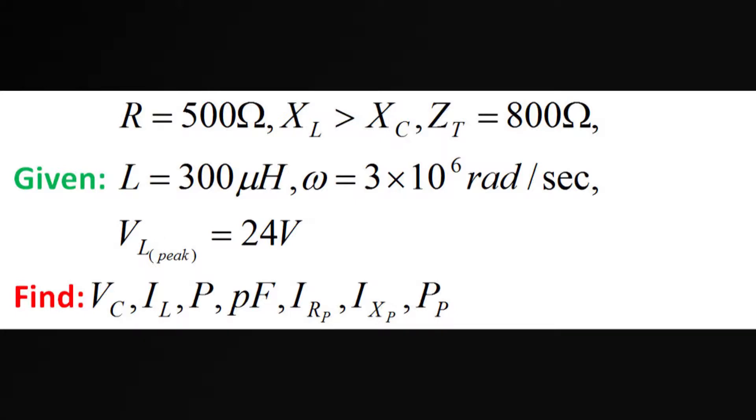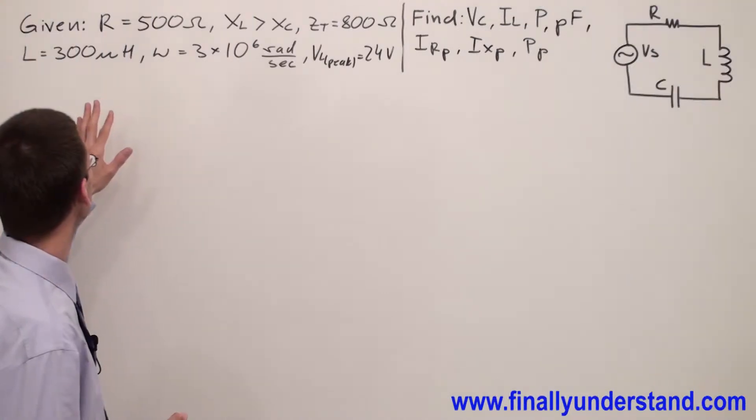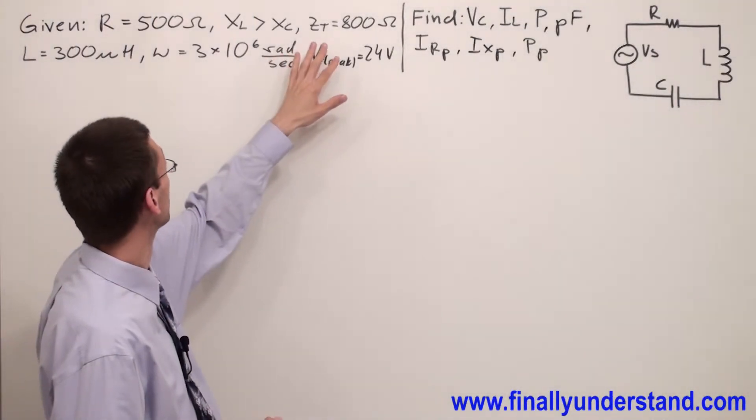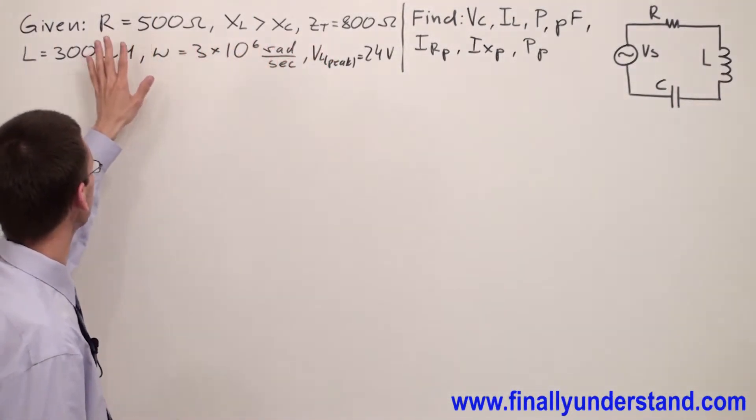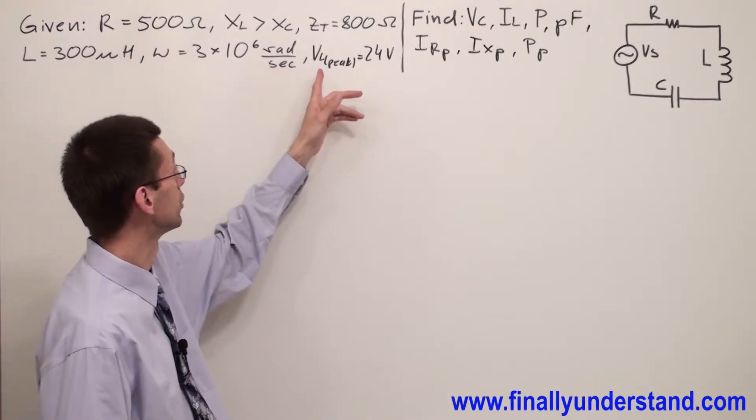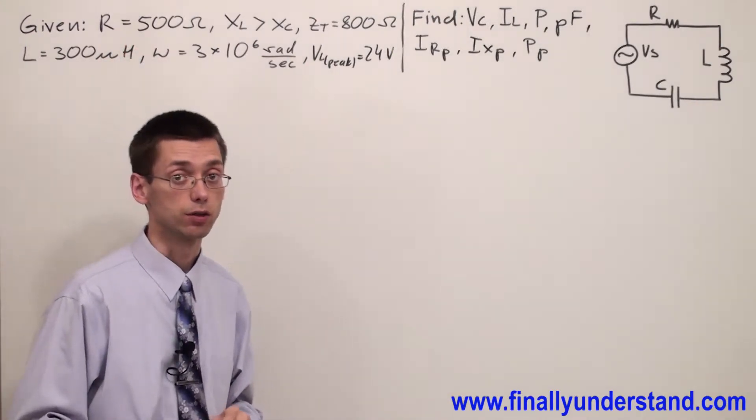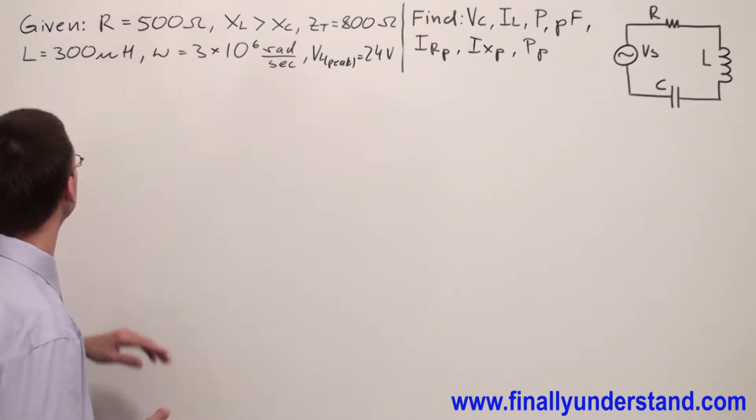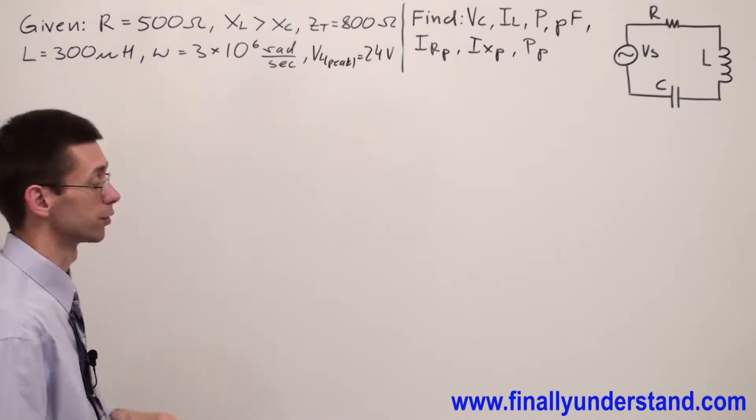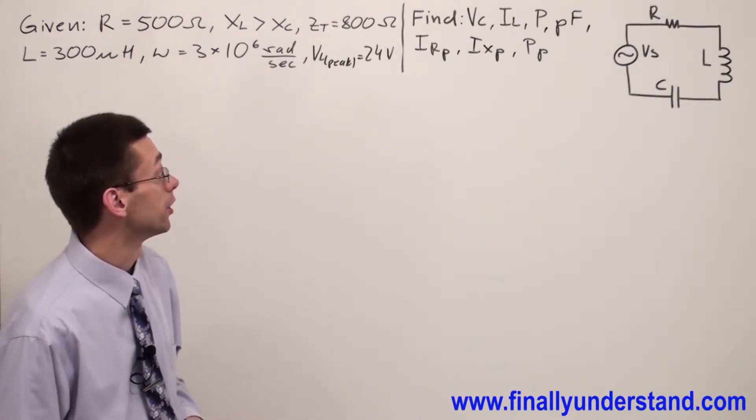We have another example on the board. Please notice that we have given Z total, we have given resistance, we have given also voltage across the inductor, and we have given inductance. So what we can do first, in order to find voltage across the capacitor, I suppose to find the capacitive reactance.